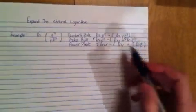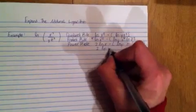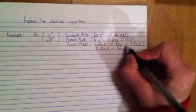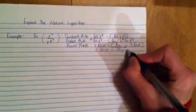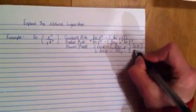Before we finish, we have to distribute the negative, so our answer is 2 natural log of x minus the natural log of y minus 3 natural log of z. All set.